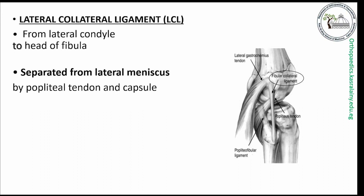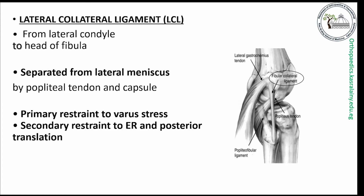It is separated from the lateral meniscus by the popliteal tendon and the capsule. This ligament is a primary restraint to varus stress and a secondary restraint to external rotation and posterior tibial translation.